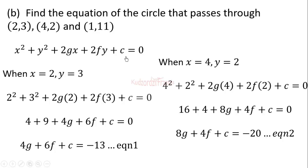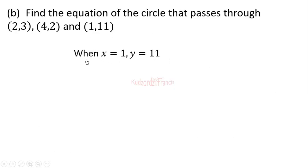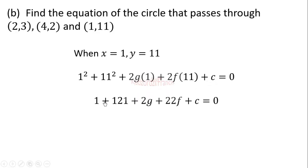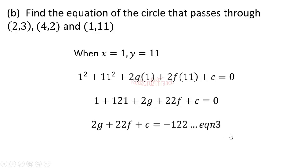For the last point (1, 11): substituting x equals 1 and y equals 11, we get 1 squared plus 11 squared plus 2g times 1 plus 2f times 11 plus c equals zero. Since 11 squared is 121, this gives equation 3: 2g plus 22f plus c equals negative 122.